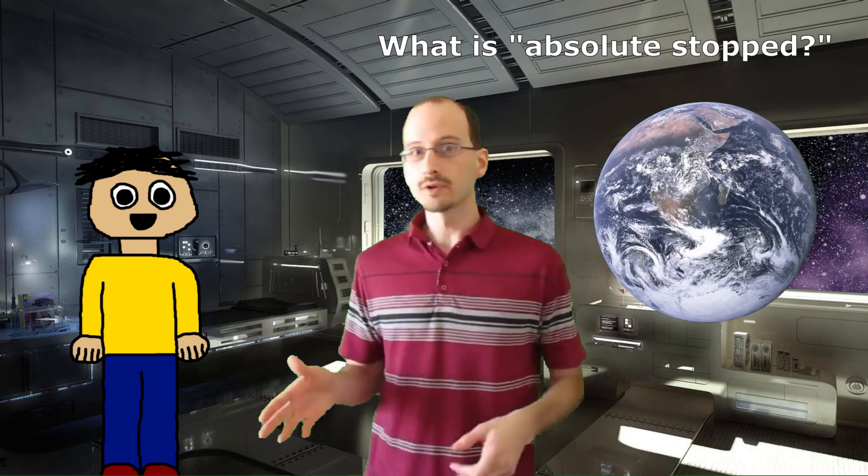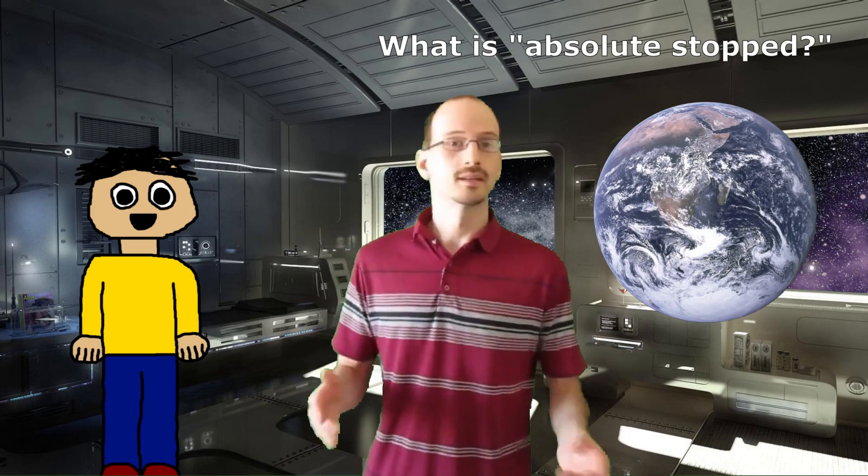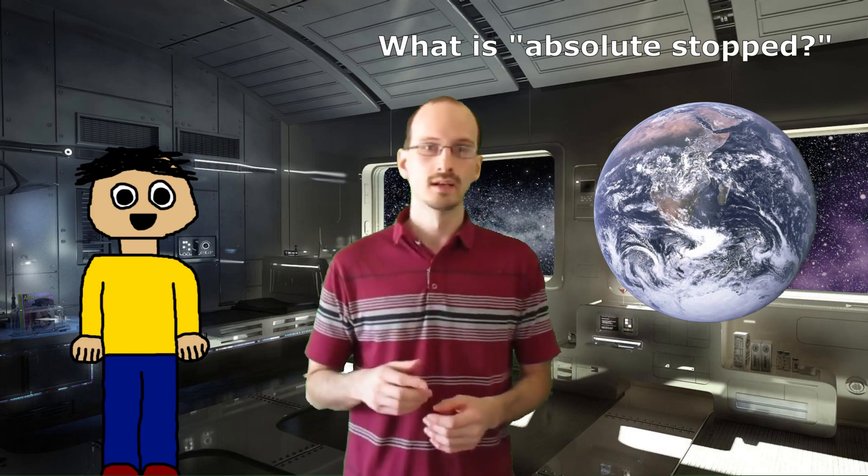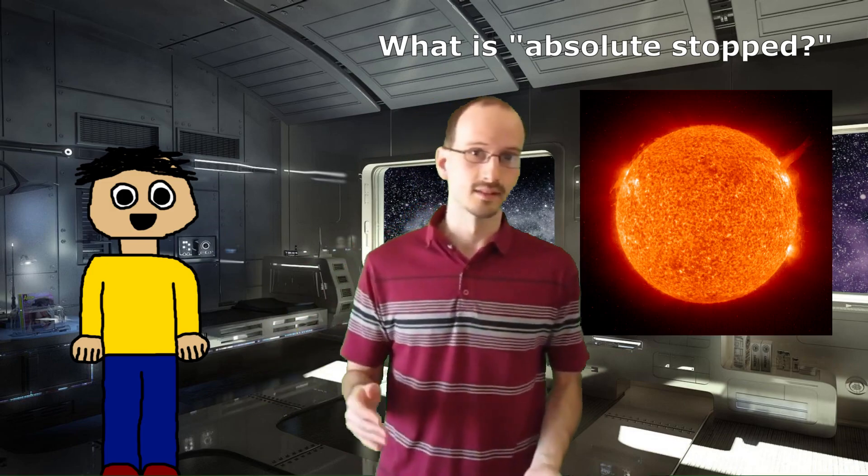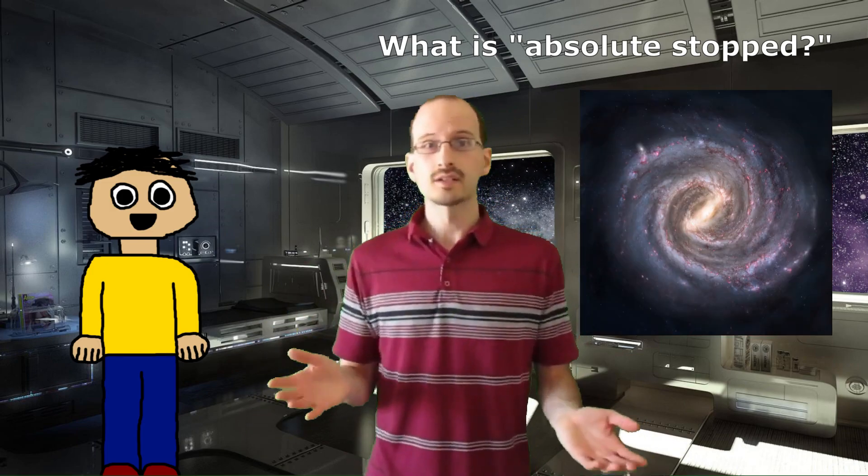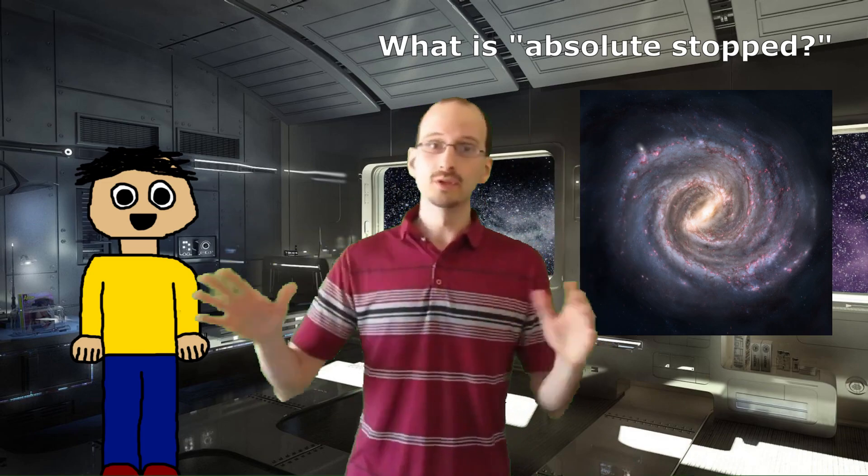It's not the surface of the Earth because the Earth is spinning and going around the Sun. It's not the Sun because the Sun is going around the center of the galaxy. And it's not the Milky Way galaxy because all galaxies are moving relative to each other. So enough of trying to find something that's absolutely stopped. Let's try another technique and measure the speed of light in all directions to see what that gets us.